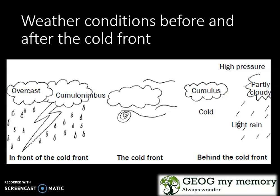The weather conditions associated before and after the cold front are shown in front of you. In front of the cold front you have overcast conditions with cumulonimbus clouds, and behind the cold front is high pressure with cumulus clouds and partly cloudy weather conditions with light rain.